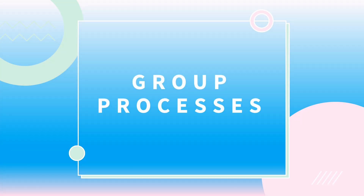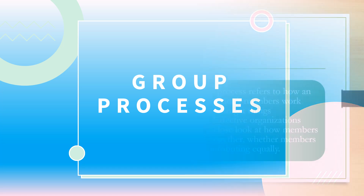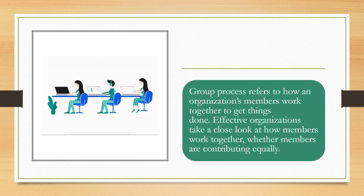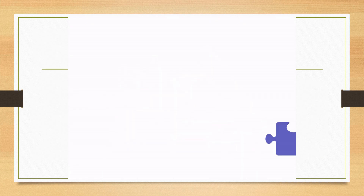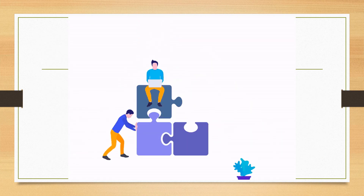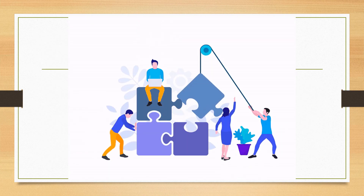Group processes refers to how an organization's members work together to get things done. Effective organizations take a close look at how members work together, whether members are contributing equally or not.